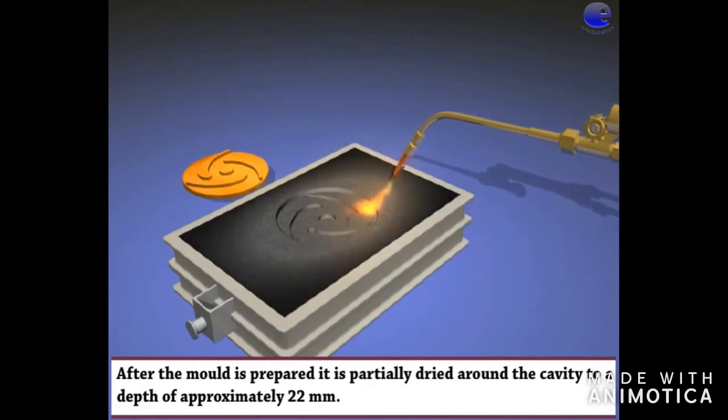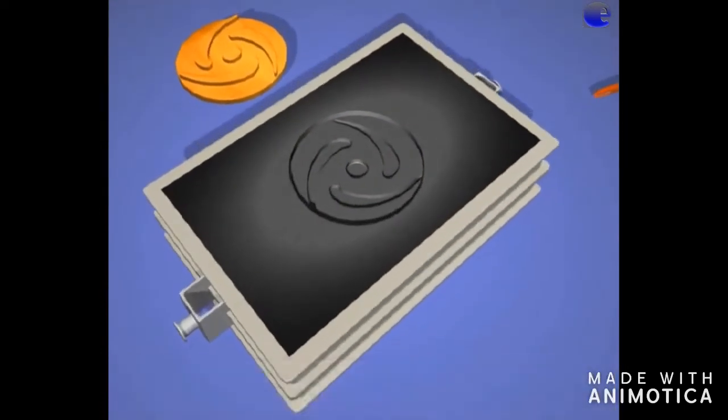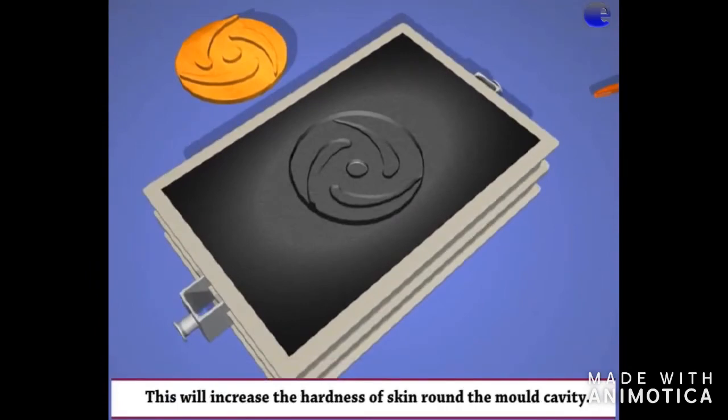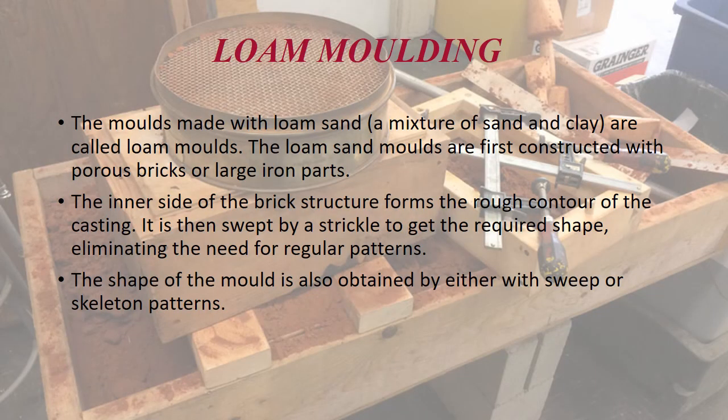In the skin dried molding process, this is the pattern and this is the flask. We insert the pattern inside the flask and fill it with sand. The flask is placed over the pattern and filled with sand. Then it is turned to its upside down position, and once the pattern is removed, it is dried. After the mold is prepared, it is partially dried around the cavity to a depth of about 22 to 25 mm.